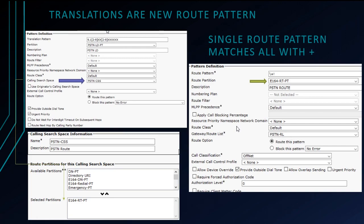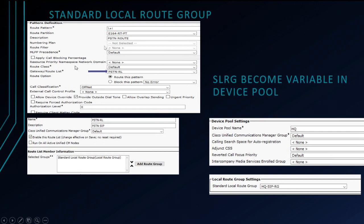Then we get into the topic of the Standard Local Route Group. We have our gateway on the PSTN route list. Within that PSTN route list, we have only one selected group — it's a wildcard, or variable, whatever terminology works best. This is just a variable: the Standard Local Route Group. This Standard Local Route Group becomes the variable in the device pool that the phones are assigned to. So in our device pool named HQ, we have this local route group setting of our HQ SIP route group. Within that route group is our SIP gateway.